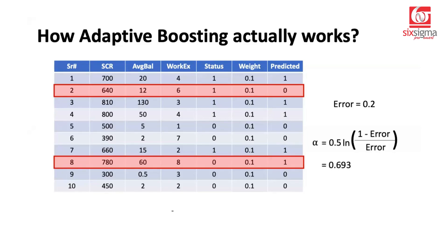How do we do that? So there is a parameter called alpha. The formula to calculate alpha is it is half times the log to the base e of one minus error divided by error. Here is the error. We can put this value here and compute alpha, which is 0.693. This 0.693 is not the weight to be assigned to the record, but the weight to be assigned to the decision tree or the weak learner that has led us to this stage.